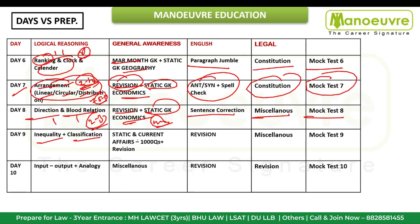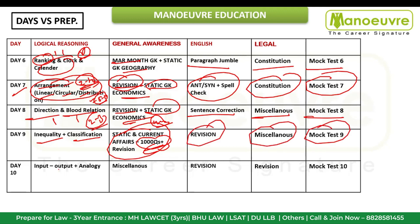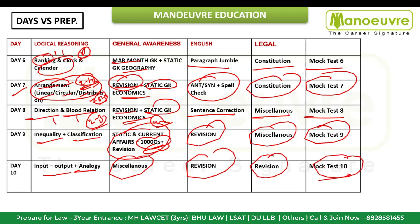Day 9: Inequality, classification. Go through the static GK and current affairs 1000 plus question booster. Revision, miscellaneous legal topics, mock 9. Day 10: Input-output — look at easy level questions. Analogy, miscellaneous, revision, and mock 10.